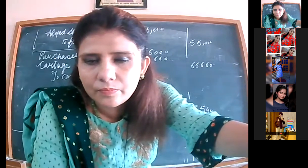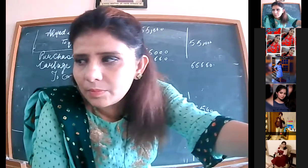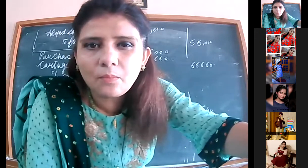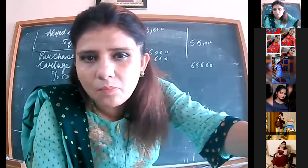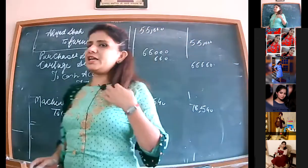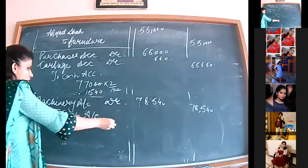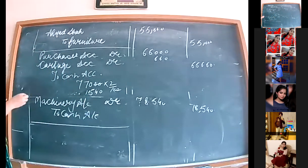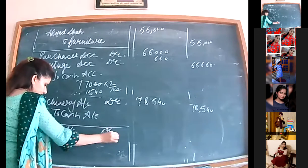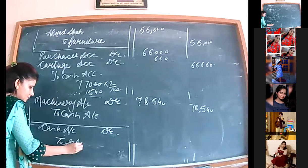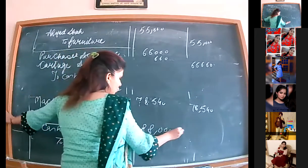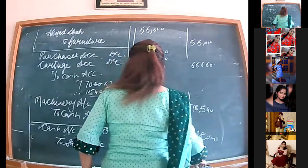Cash account debited to sales account — Rs. 88,000. Goods costing Rs. 84,000 were sold for Rs. 88,000. Entry of sale is always to be passed with the selling price. Profit on sale of goods is never shown in the journal entry — simply pass the selling price.